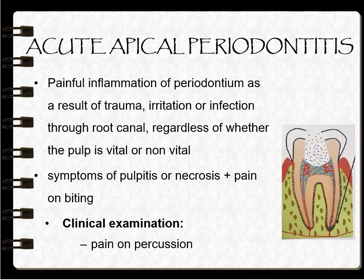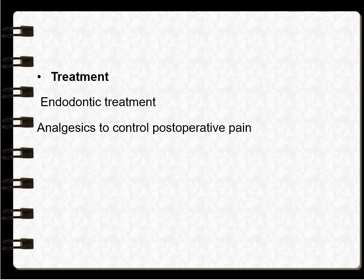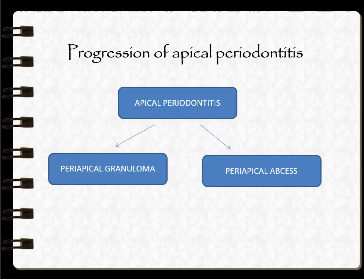Acute apical periodontitis is a painful inflammation of the periodontium as a result of trauma, irritation, or infection through the root canal, regardless of whether the pulp is vital or non-vital. Symptoms of pulpitis or necrosis may be present along with pain on biting. On percussion, the patient feels pain. Radiograph shows widening of the periodontal ligament space at the apex of the roots. Treatment includes endodontic treatment, and analgesics should be prescribed to control post-operative pain.